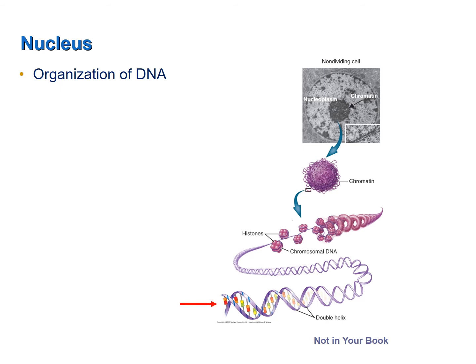Chromatin consists of DNA and proteins called histones. DNA is a double helix — a very thin but very long molecule, which means it is easily broken or fragmented. To protect the DNA from fracture, it is wound around proteins called histones. The accumulation of the histones with their wrapped DNA forms chromatin.